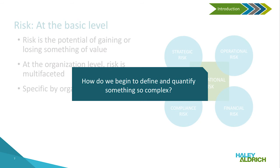Oftentimes risk takes several forms and therefore needs to be defined specific to the organization or team working on it. In a typical system, numerous complexities exist that make defining risk a challenge — for example, different priorities across an organization or different regulatory requirements related to an environmental remediation site or piece of operating equipment. There are also typically different processes being followed to manage each piece of the whole that can bring their own elements of risk into play. So how do we tackle something so complex?